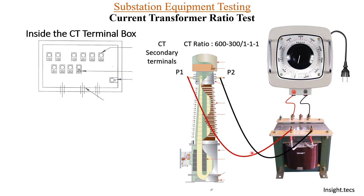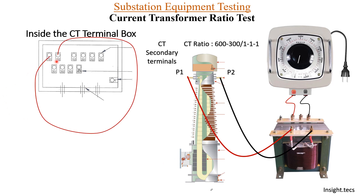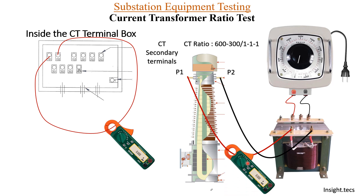The other side of the current transformer output is connected to P2, completing the current path. To measure the secondary current, inside the terminal box we connect 1S1 and 1S2, and measure the amperes on the secondary terminals using a clip-on meter. We also measure amperes on the primary side using another clip-on meter. Once all connections are made, we provide AC supply to the variac.